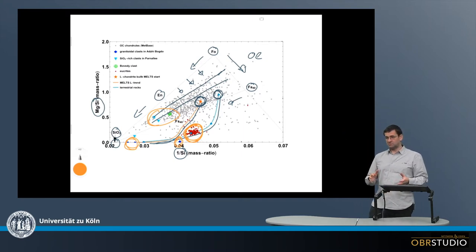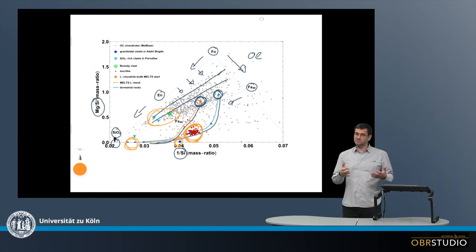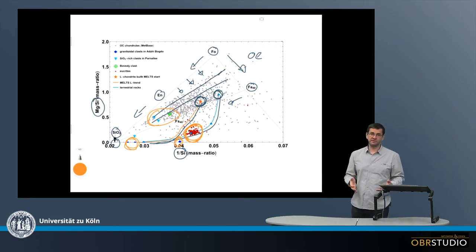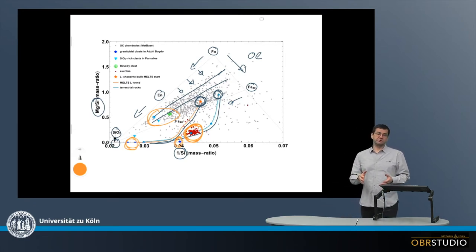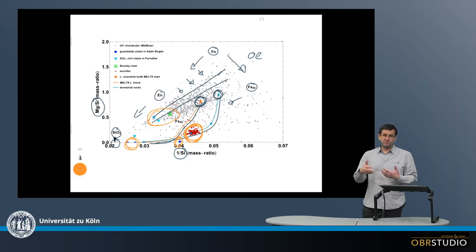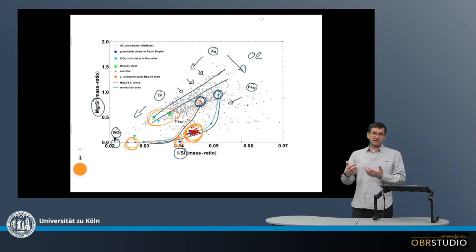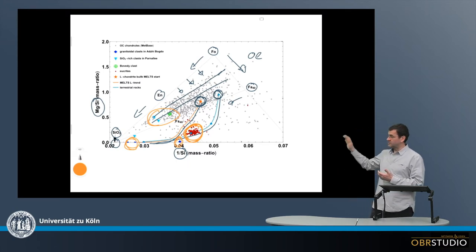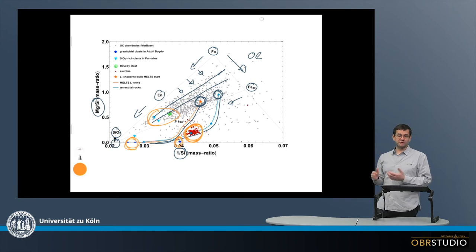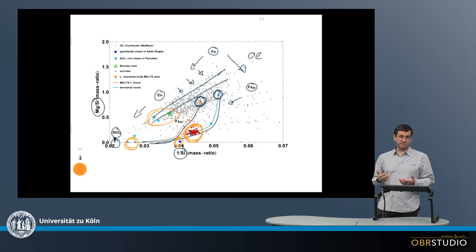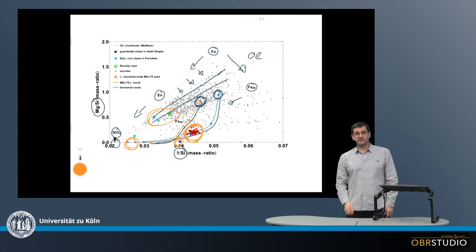One explanation is that chondrules, during their formation, acted as an open system and reacted with the surrounding gas, thereby exchanging material. This would then produce this kind of mixing and also explain the variation in bulk chondrule compositions that we observe in meteorites.